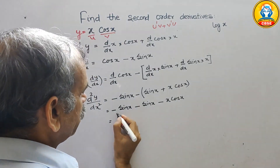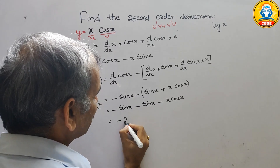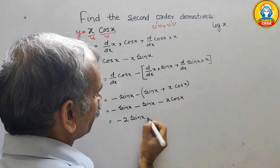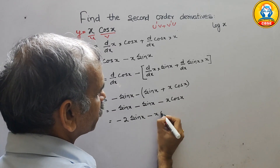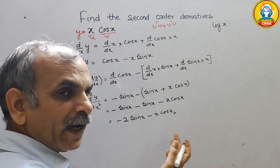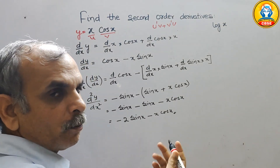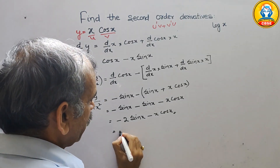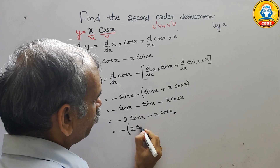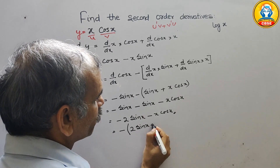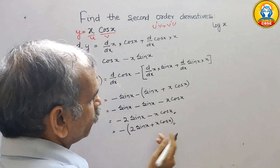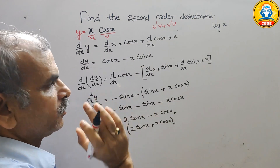So this gives minus 2 sin x minus x cos x. You can write it this way, or take negative as a common factor to get negative of (2 sin x + x cos x). So this is the answer for the first question.